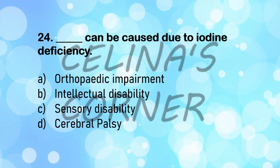Question 24: dash can be caused due to iodine deficiency — is it orthopedic impairment, intellectual disability, sensory disability, or cerebral palsy? The correct answer is option B, intellectual disability. Iodine deficiency is a leading cause of intellectual disability. In school we also learned that iodine deficiency causes goiter, which enlarges the thyroid gland.